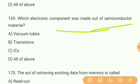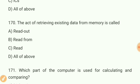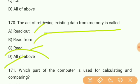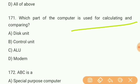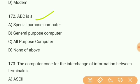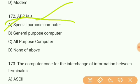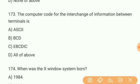Question 169: Which electronic component was made out of a semiconductor material? Answer — ICs, integrated chips. Question 170: The act of retrieving existing data from memory is called what? Answer D — all of the above: read out, read from, read. Question 171: Which part of the computer is used for calculating and comparing? Answer — ALU, Arithmetic Logic Unit. Question 172: ABC is a what? Answer A — special purpose computer.